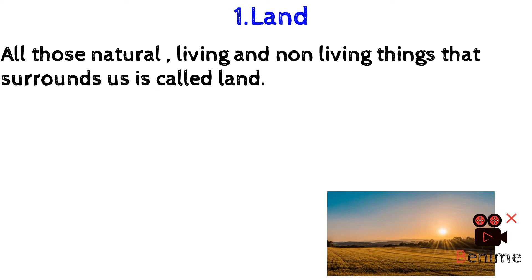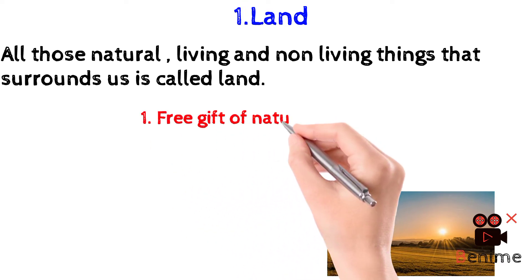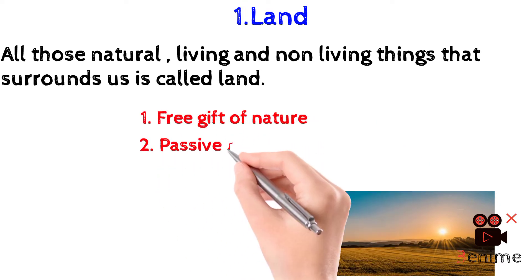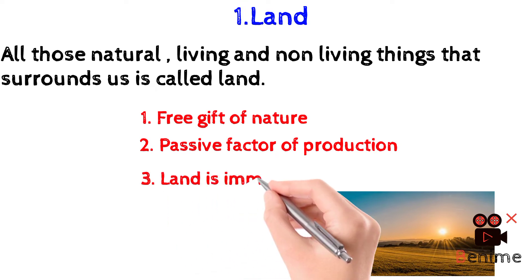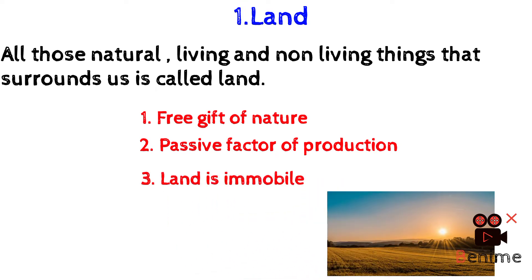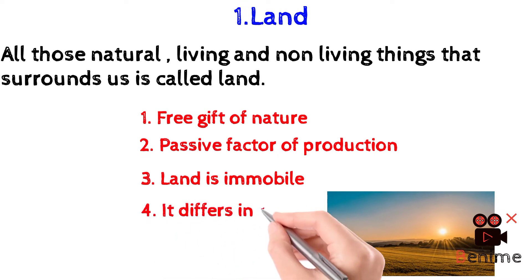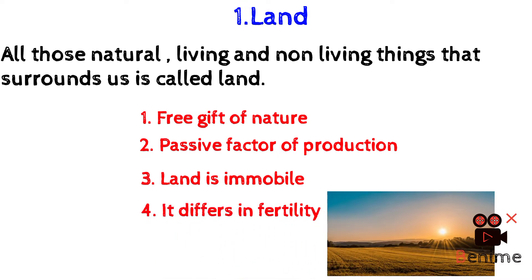Now let us see some of the features of land. Number one: land is a free gift of nature. Number two: land is a passive factor of production, meaning land cannot work by itself — it needs human beings to work on it. Number three: land is immobile, meaning we cannot transfer land from one place to another. Number four: land differs in fertility, meaning different land has different fertility power.